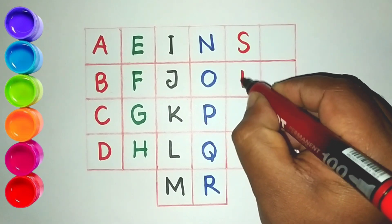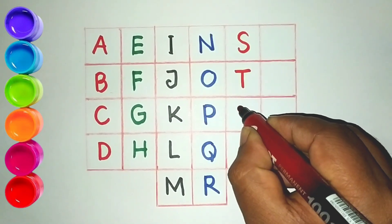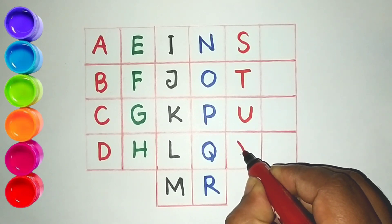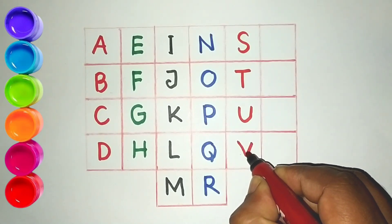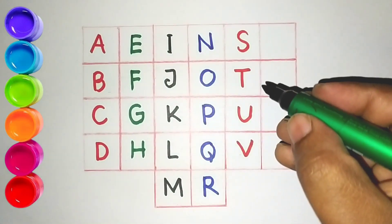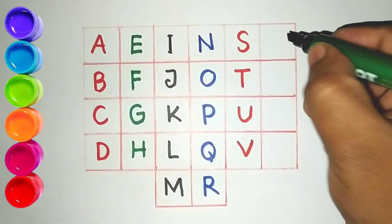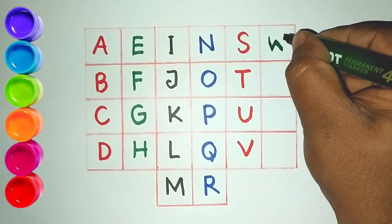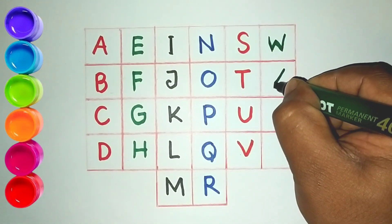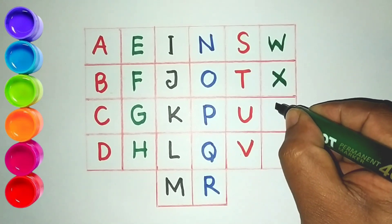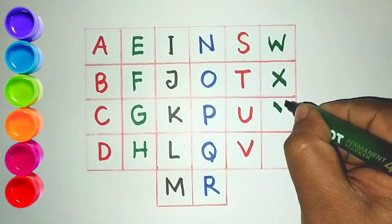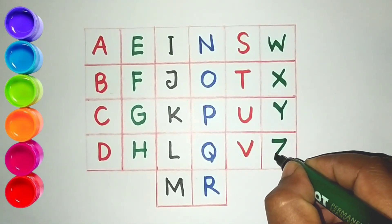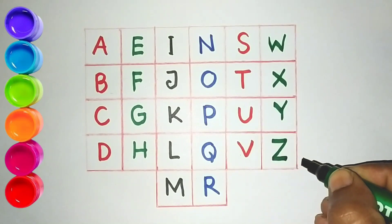S, T, U, V. Green color pen writing. W, X, Y, Z.